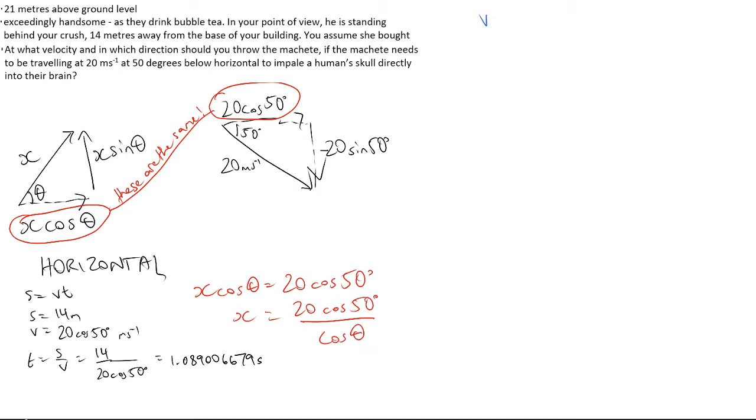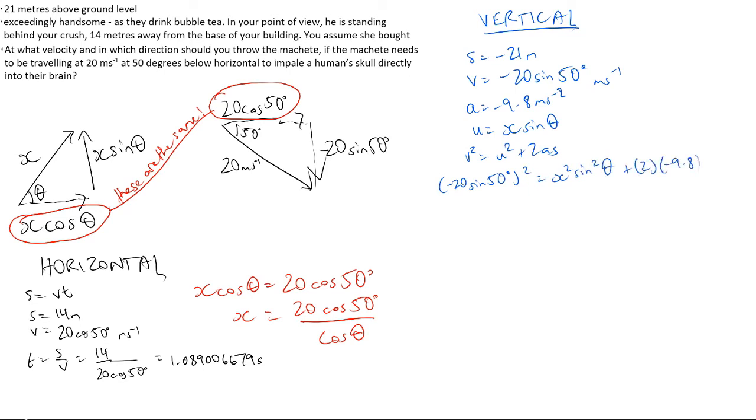Moving on to vertical, list all variables you know: s equals negative 21 meters, a equals negative 9.8 meters per second squared, v equals negative 20 sin 50 meters per second, and u equals x sin theta. The equation relating these is v squared equals u squared plus 2as. Plug in the above numbers and simplify, leaving u with x squared sin squared theta equals negative 176.8976. From the prior equation of x cos theta equals 20 cos 50, we can get x equals 20 cos 50 over cos theta. Substitute this back into the equation above.